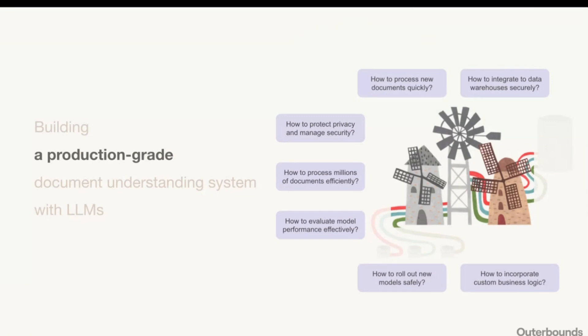Once you've built a system performing a business-critical action, what happens with a new version? If someone wants to change the prompt or apply a new technique, you can't just replace the production system with the click of a button. The same best practices that apply to traditional ML apply here: you may want a challenger model or prompt running as an A/B experiment alongside the production version, comparing results against KPIs to see if the new approach works better. These are infrastructure-focused questions that don't always get enough attention.